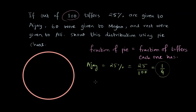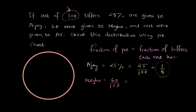Now let's consider how many toffees Megha has got. Megha has got 60 toffees out of 100. Note that it's not given as a percentage, but because the total number of toffees is 100, the denominator still comes out to be 100, giving us 60/100, which equals 3/5. So 3/5 is the fraction of the circle assigned to Megha's toffees.